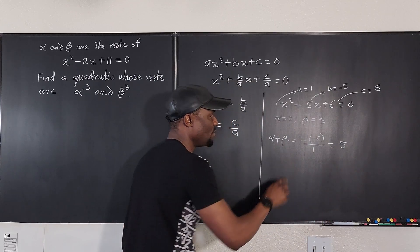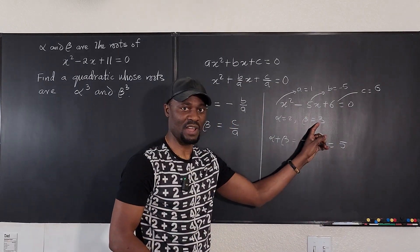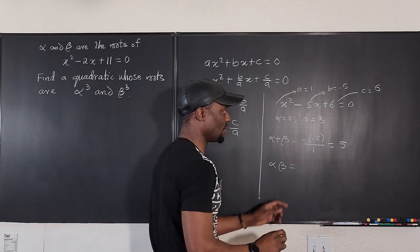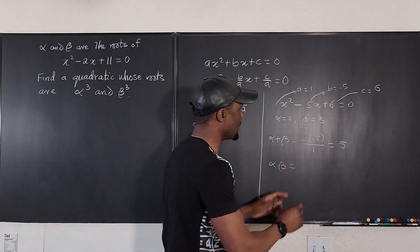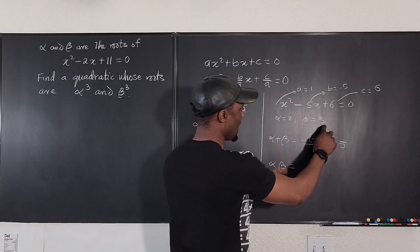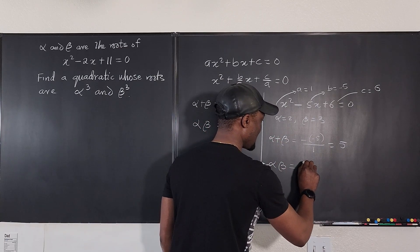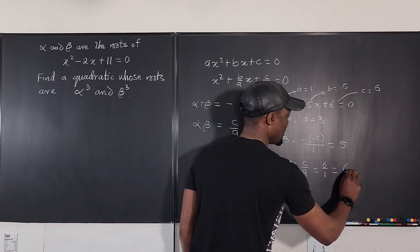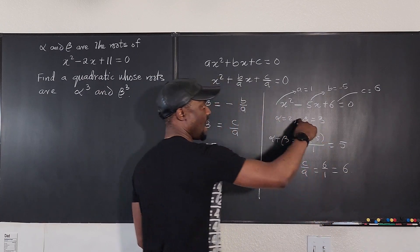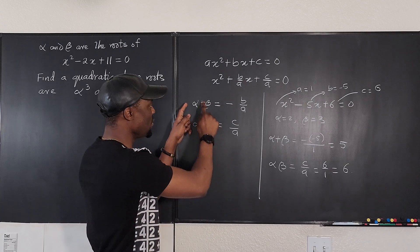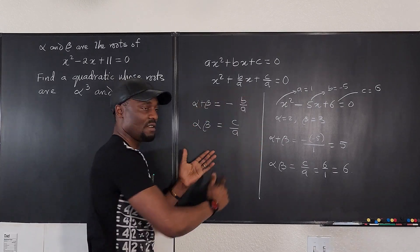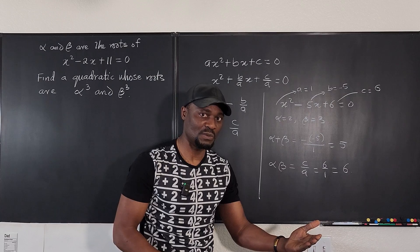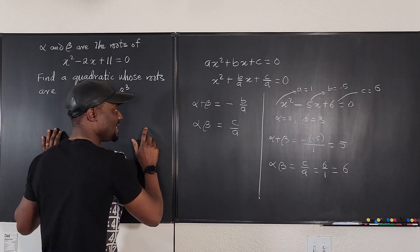The sum of the roots is clearly 5. And the product of the roots, alpha beta, is going to be 2 times 3, which is c over a — 6 over 1 — which equals 6. So if you use just these formulas, you know you're going to get the sum of the roots and the product of the roots without needing to know what alpha or beta individually are.